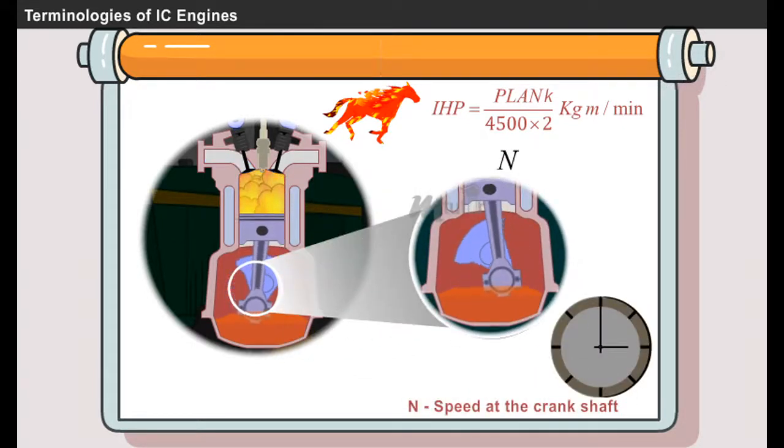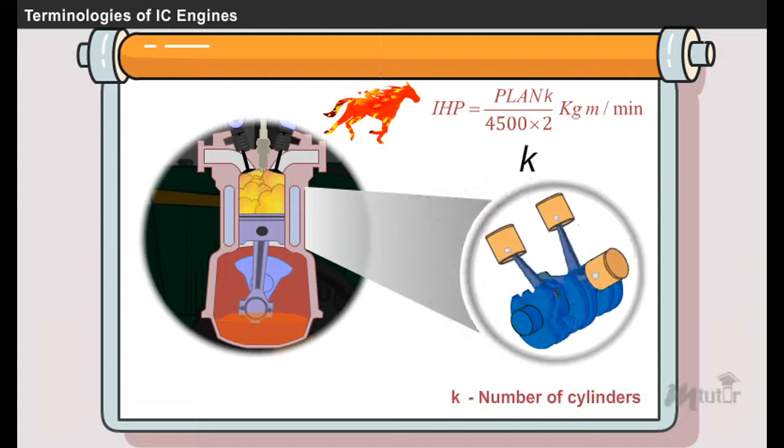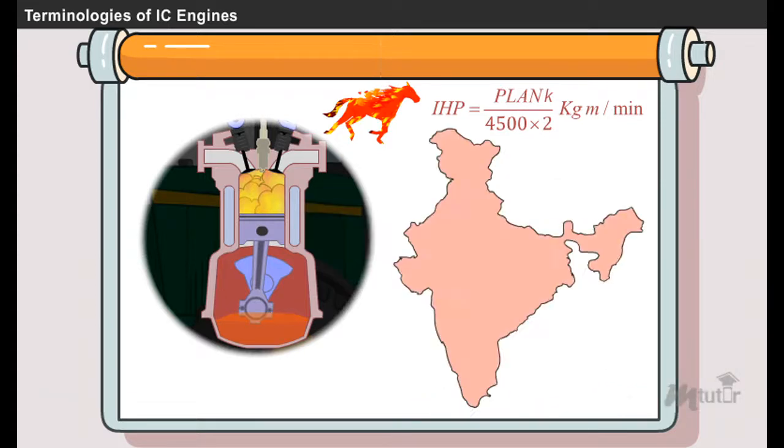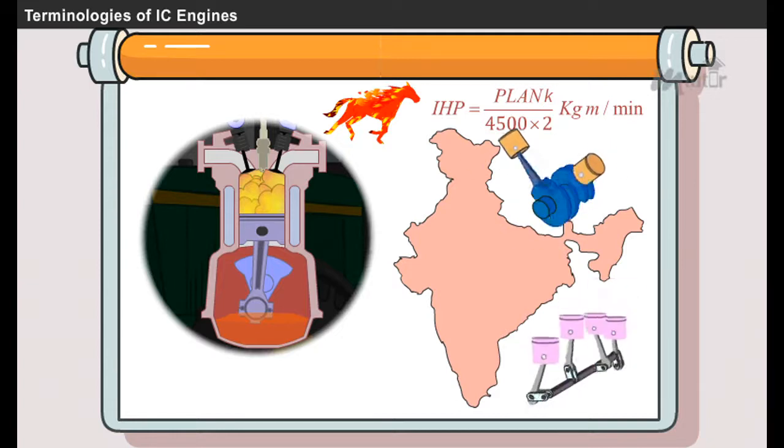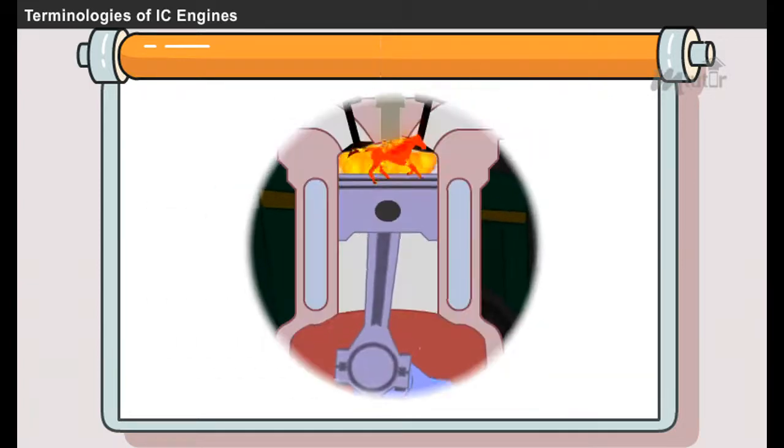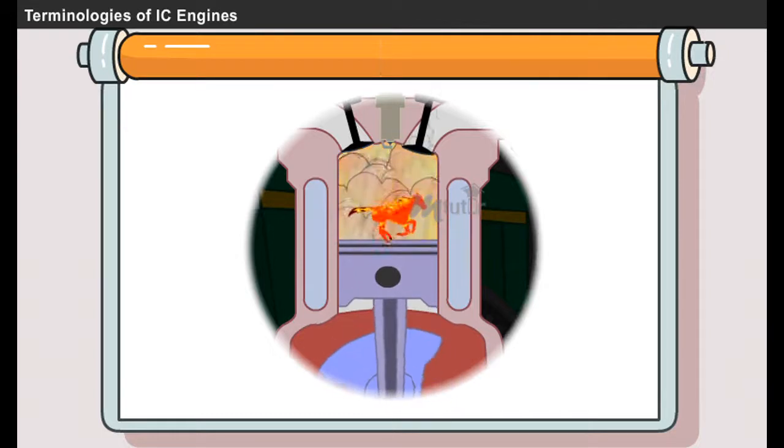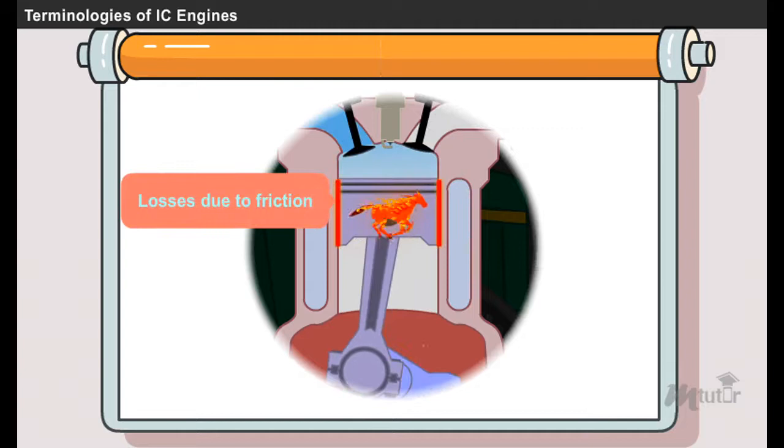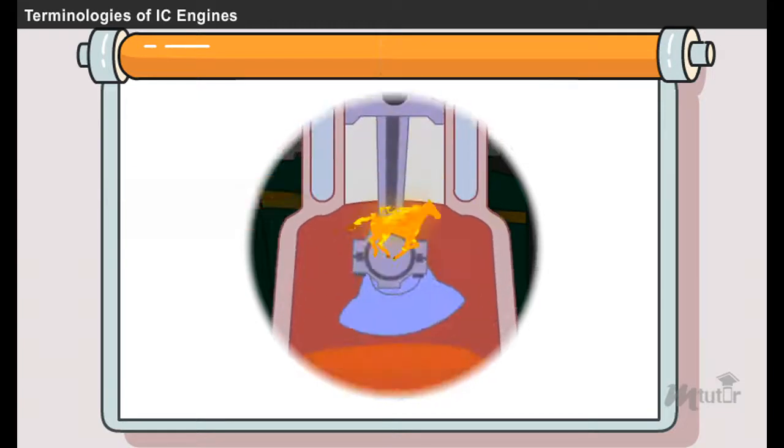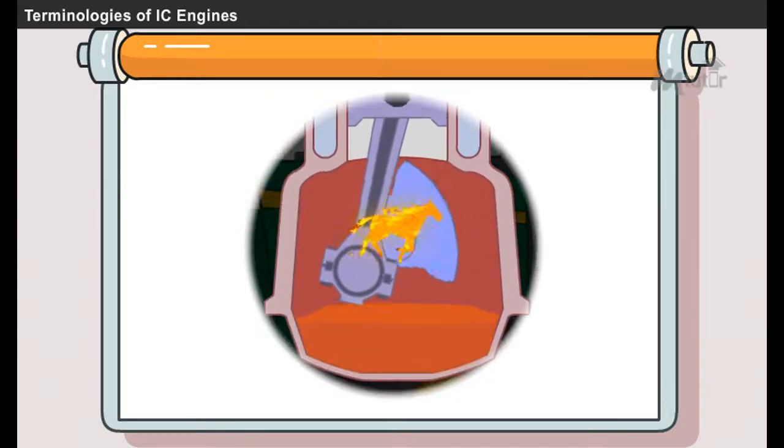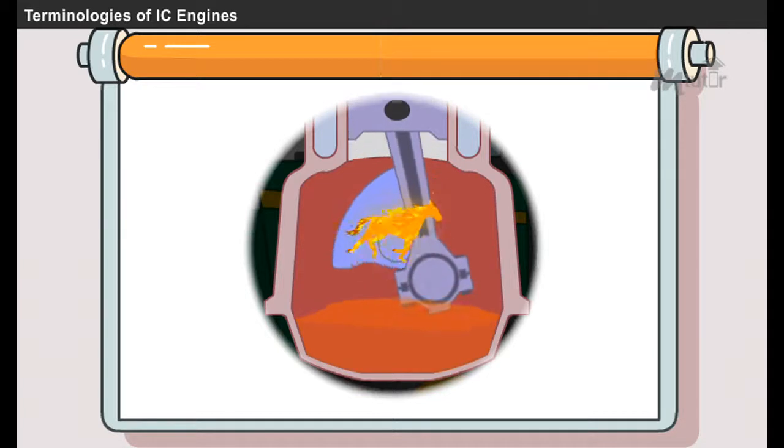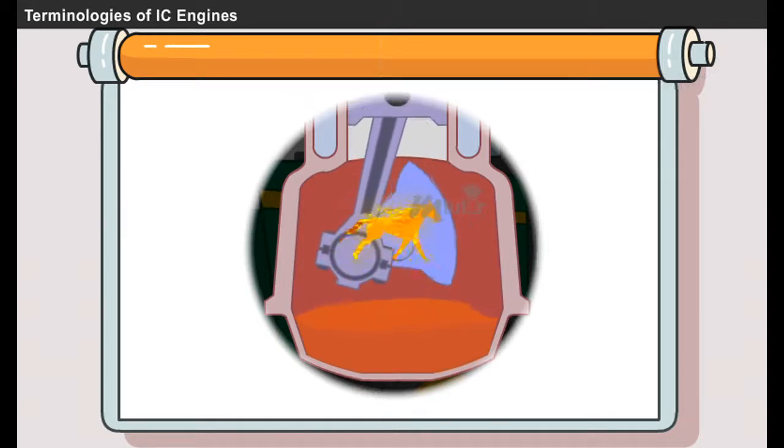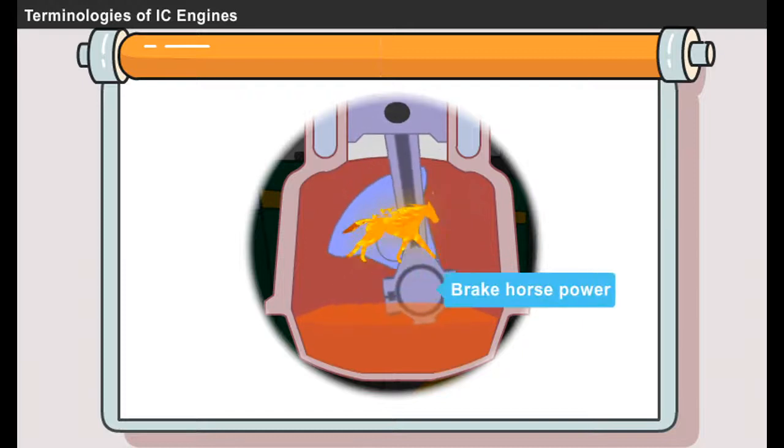In India, most of the tractor engines are designed with two to four cylinders. The indicated power produced in the cylinder of the engine cannot be achieved completely by the crankshaft. There will be some losses due to friction, so the crankshaft never receives the whole power generated in the engine cylinder. The horsepower available in the crankshaft is known as brake horsepower.